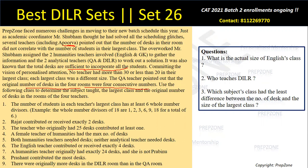Hints five and six: both humanities teachers needed desks — meaning their student count exceeded their desk count. Neither analytical teacher needed desks — meaning analytical teachers had a desk surplus. So humanities teachers (English and GK) have student surplus, while analytical teachers (QA and DLR) have desk surplus.